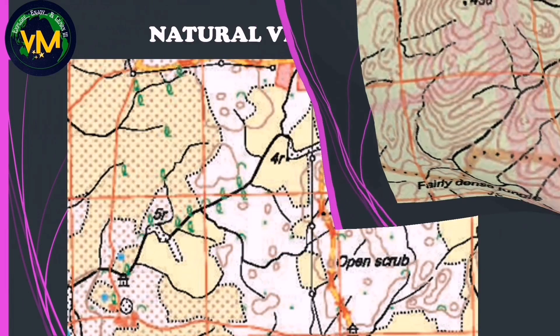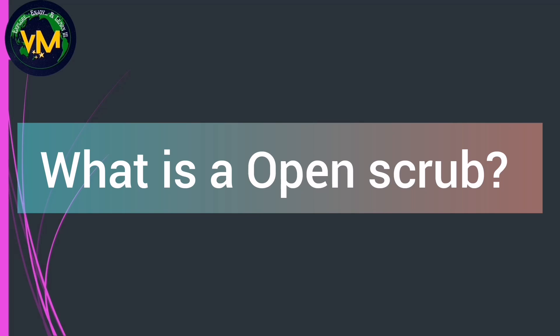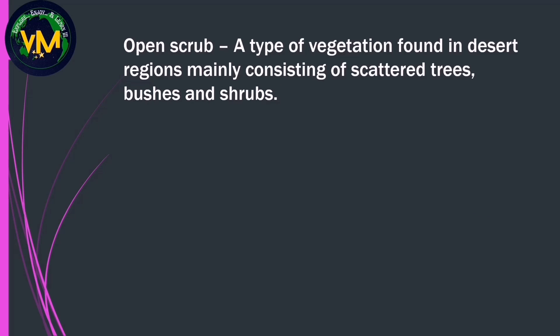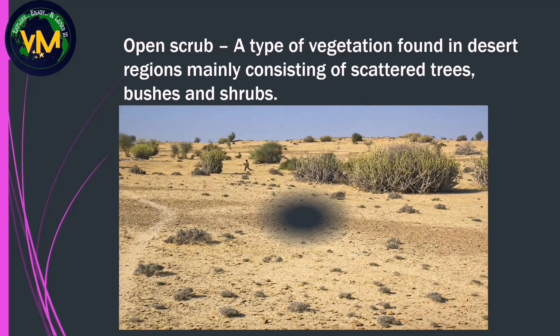In this map, can you name the vegetation? There is no green color, so we have to look at the white color part and look for the word scrub. Here we have open scrub. Now, what is open scrub? Open scrub is a type of vegetation found in desert regions or semi-desert regions and it mainly consists of scattered trees,